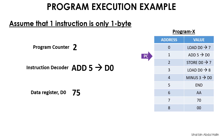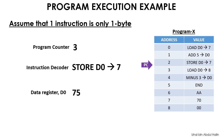The third fetch-execute cycle now starts with the program counter's value equal to 2. This value is put onto the address bus and now the program counter is pointing to address 2. The instruction to store the data in register d0 to address 7 is sent to the instruction decoder through the data bus, and the program counter's value is incremented to 3. The decoded instruction causes the CPU to locate address 7, and the value 75 in d0 overwrites the value at address 7. This concludes the third fetch-execute cycle.